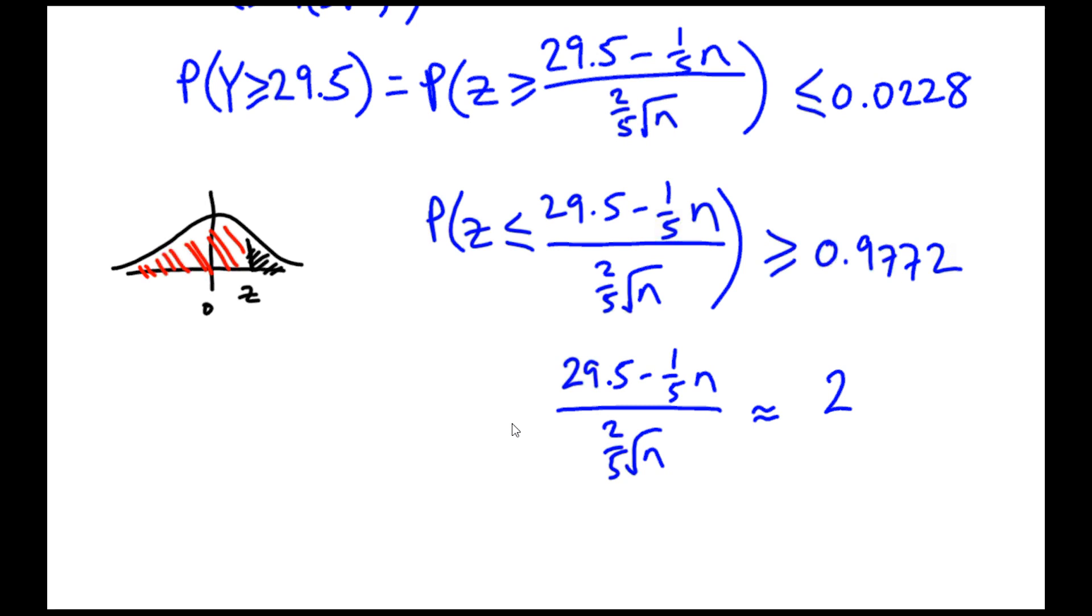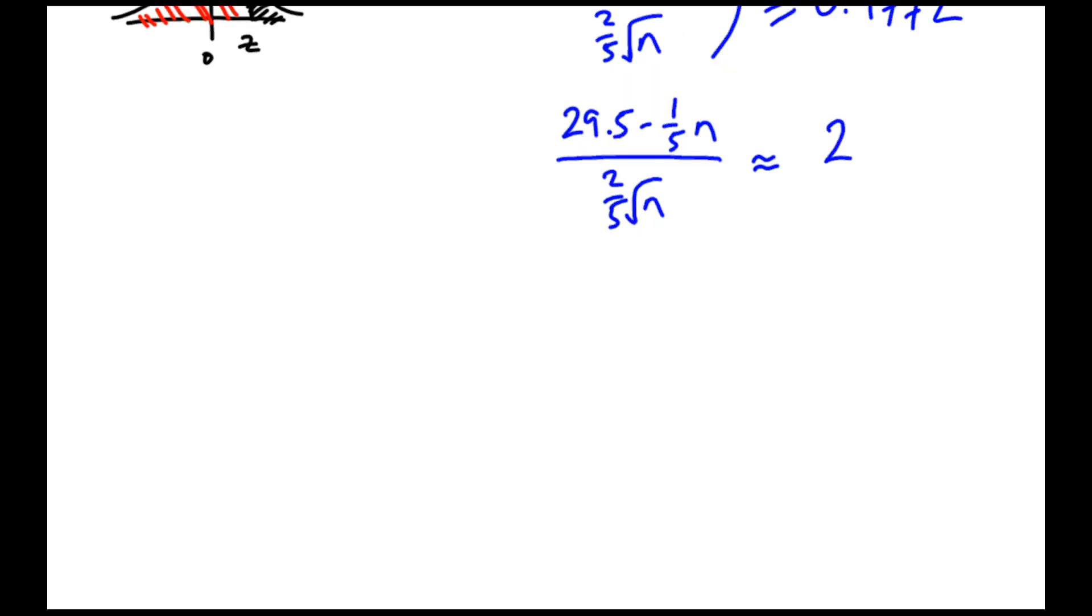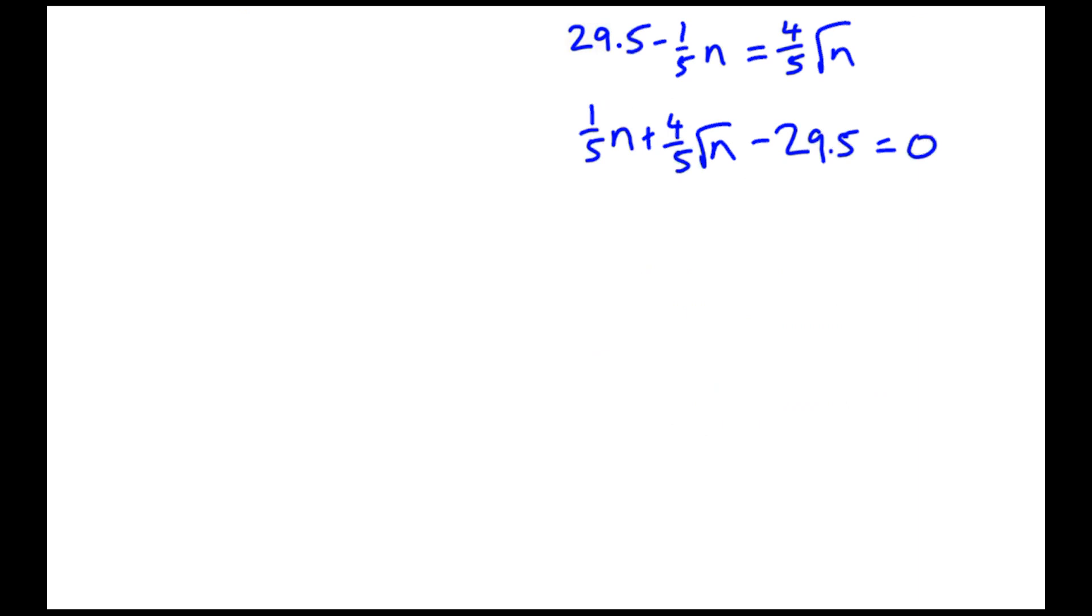So 29.5 minus a fifth of n over two-fifths root n should approximately get me 2. From here, I'm going to try and rearrange. I can see I should get quite a nice equation to work with. Let's relieve ourselves of this fraction. That should be four-fifths root n. I can see an underlying quadratic here. One-fifth of n plus four-fifths of root n minus 29.5 equals 0. There is a quadratic here - one of the powers of n is double the other power of n. I have n to the 1 and n to the 1 half. Let's let y equal root n.